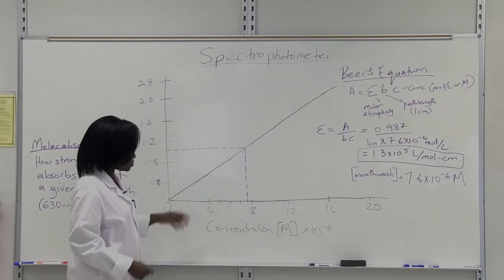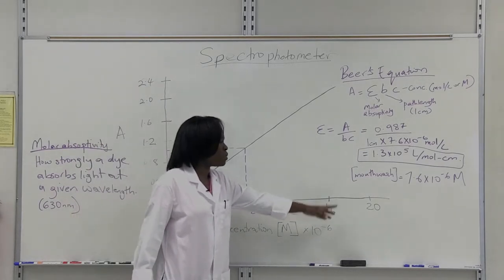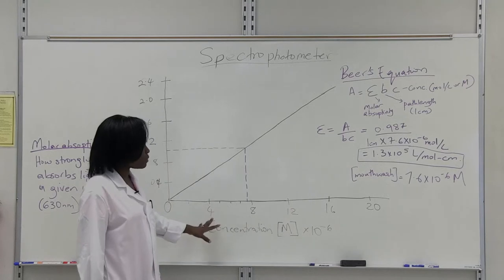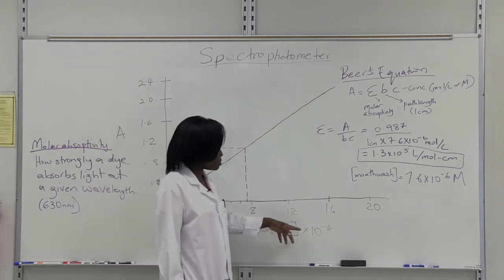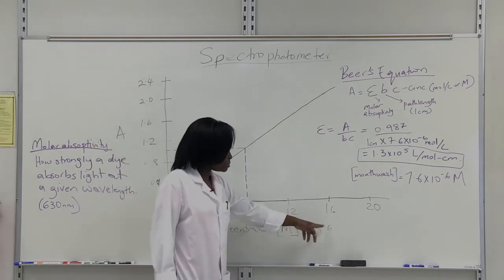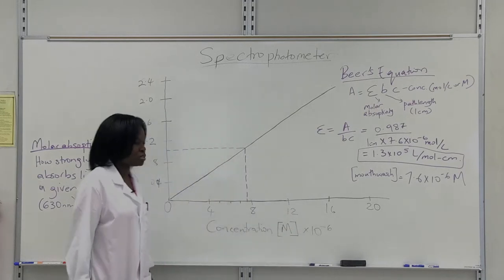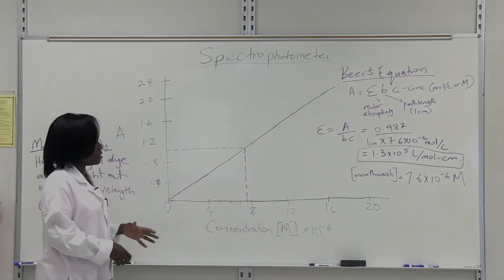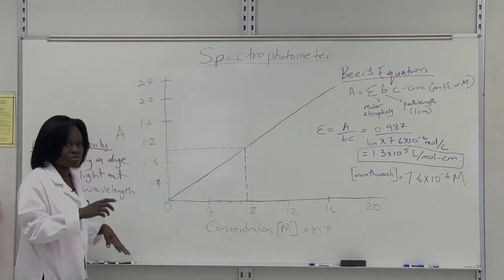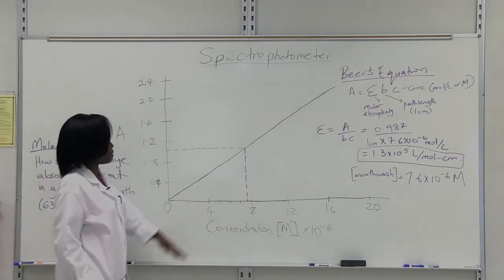you can represent your concentrations in whole numbers. But just know that when you're dealing with a concentration, you're actually multiplying what you get by 10 to the minus 6. So that eliminates the worry of having to represent these small decimal numbers on your graph.